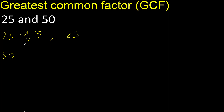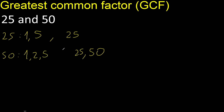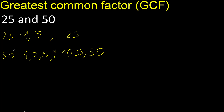Therefore, factors — always start with 1. 50 divided by 1 is 50. Next, divided by 2 is 25. Next, cannot be divided by 3. Cannot be divided by 4. Divided by 5 is 10. Next, 6: cannot be divided by 6. Cannot be divided by 7. Cannot be divided by 8. Cannot be divided by 9. Next, 10 — 10 is here. Factors.